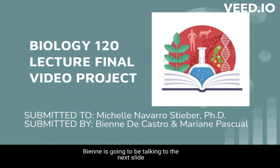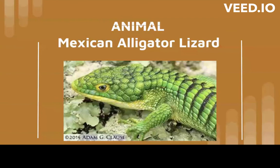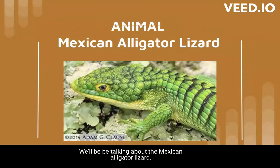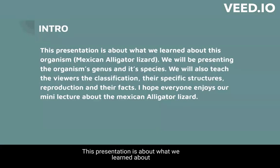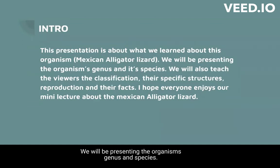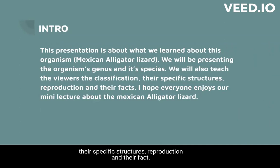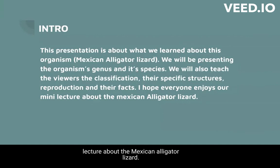Our topic for today is animal. We'll be talking about the Mexican alligator lizard. This presentation is about what we learned about this organism. We will be presenting the organism's genus and species. We will also teach the viewers their classification, their specific structure, reproduction, and their facts. I hope everyone enjoys our mini-lecture about the Mexican alligator lizard.